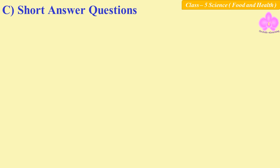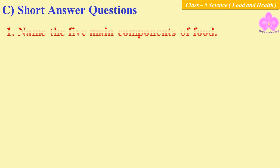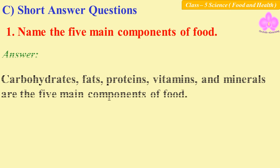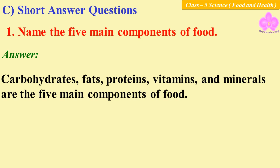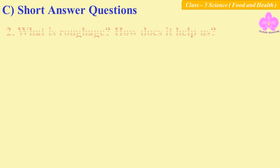Short answer questions. Number one: name the five main components of food. Answer: carbohydrates, fats, proteins, vitamins, and minerals are the five main components of food.